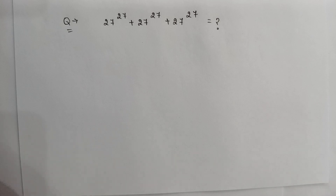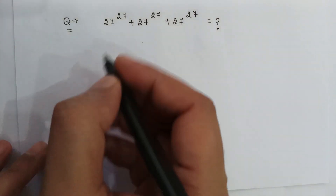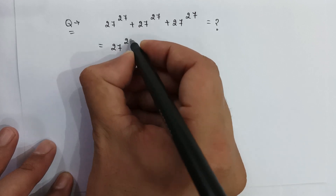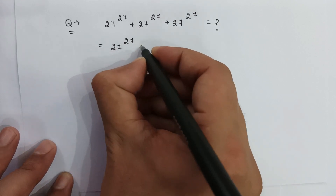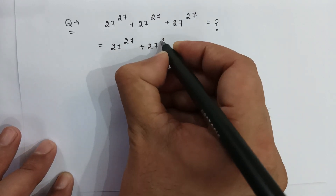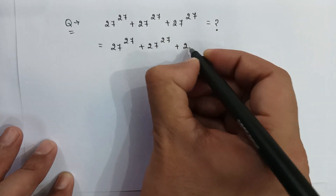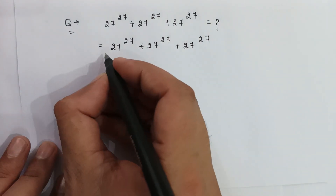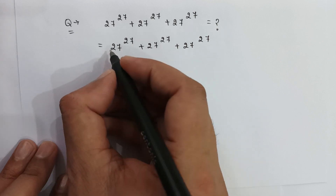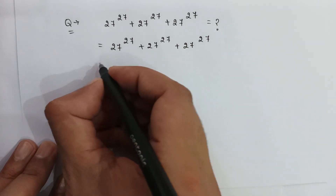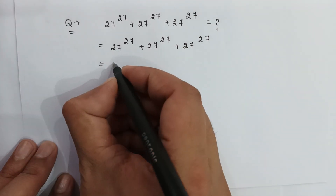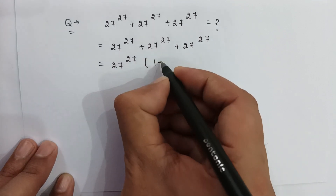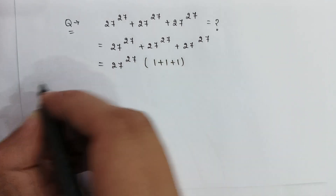This is a very nice exponential problem. We have 27 to the power 27 plus 27 to the power 27 plus 27 to the power 27. If we take 27 to the power 27 common from all these terms, then it will be 27 to the power 27 multiplied by 1 plus 1 plus 1.